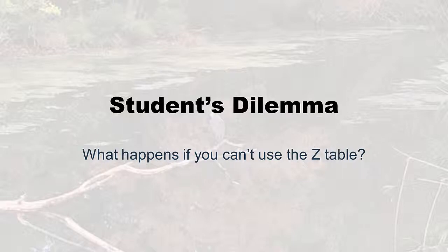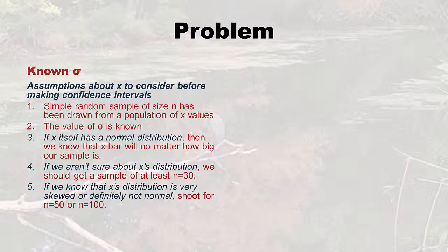The reason I'm using a very serious tone of voice is because this is a serious issue. What happens if you can't use the z table? So I'm going to tell you about student's dilemma. Now, student wasn't really a student — that's just a nickname for a guy who was having a political issue, so he couldn't use his real name. I'll get to that in a moment, but first I want to set the stage for this political issue.